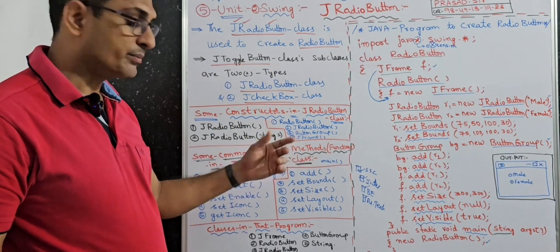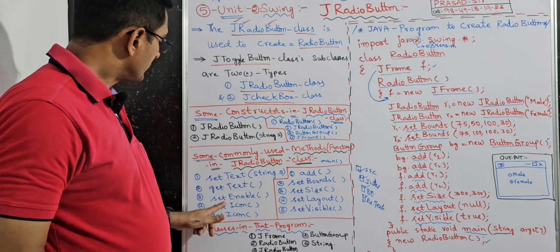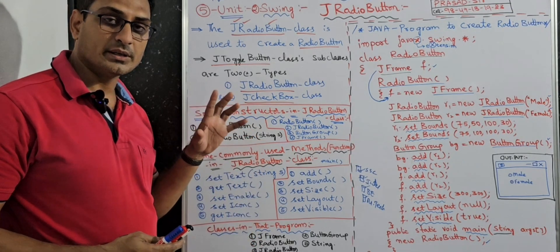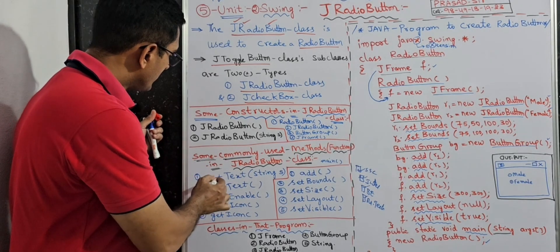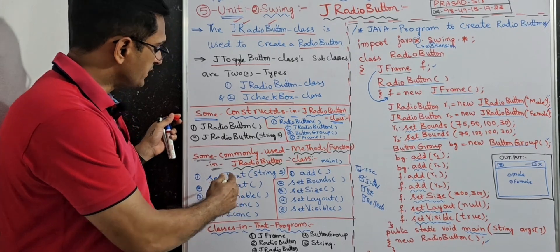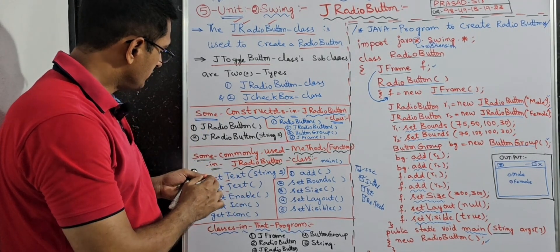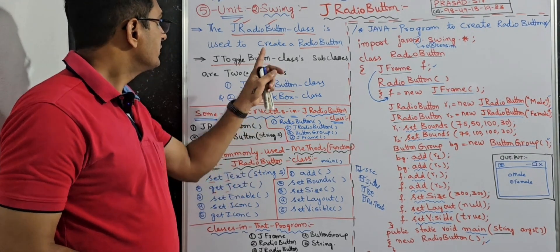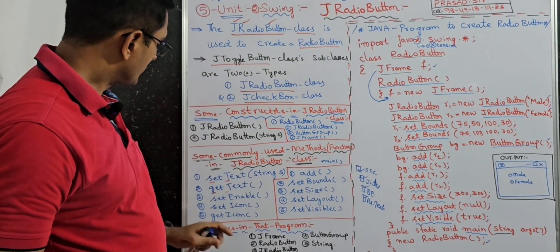In setText, S should be small and T should be capital — no space between words, that is naming convention. Same for getText: G small, T capital. setEnable, setIcon, getIcon — these are some commonly used methods in the JRadioButton class, which is today's topic. Now I will explain the program and get back to the theory.